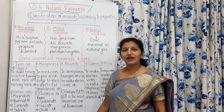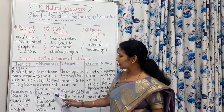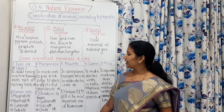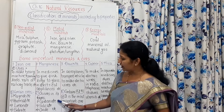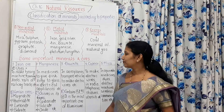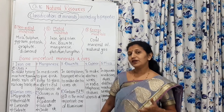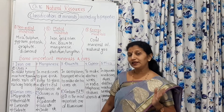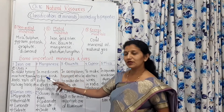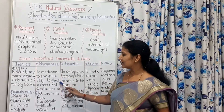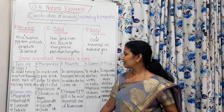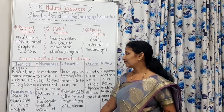Manganese occurs in different forms: carbonate form, silicate form, and oxide form. Due to its properties, it is used in medicines, it is used to give a pink tinge to glass, and it is also used in electrical appliances.